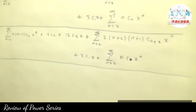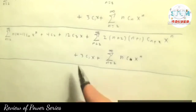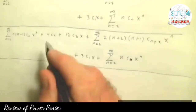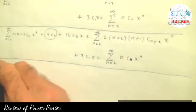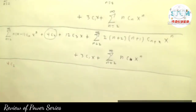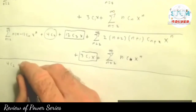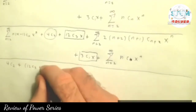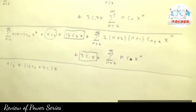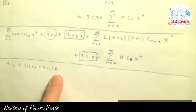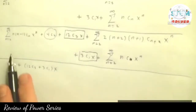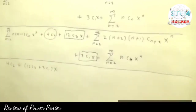Now you're going to add the like terms. We're looking for essentially constant terms to start off with. This is the only constant term I have, so we put that by itself: 4c₂. The next one will be x to the 1st. I have 12c₃ and 3c₁, so factoring out the x, you get (12c₃ + 3c₁) times x. So the x to the 0 term is first, then the x to the 1st term. Everything else — x squared, x cubed, x to the 4th — can be obtained from the power series, and we can put all of them together because they all start at x squared and all start with the same n, in this case n equal 2.